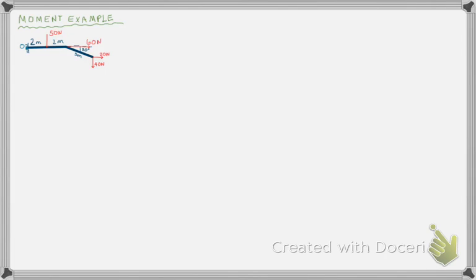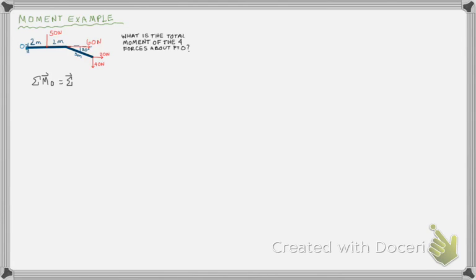So let's get started with the first example. Here I have a rod of some sort attached to the wall at point O, and there are four forces acting on this rod. I would like to know what is the total moment of the four forces about point O. To solve this, I'm going to find the sum of the moments about point O equal to the sum of each of the forces times the distance. I'll break this problem into each of the four forces and look at them separately to see how they cause a moment about point O.